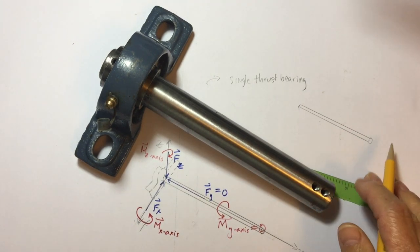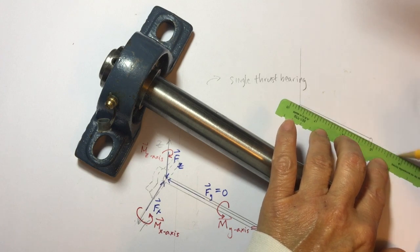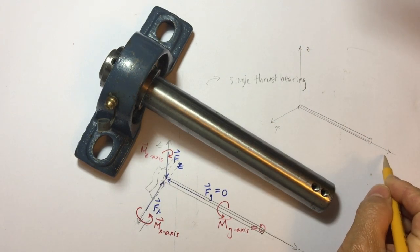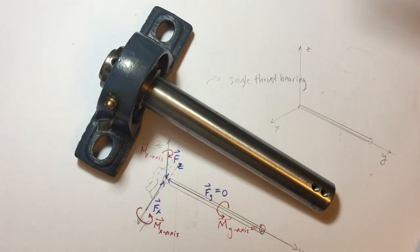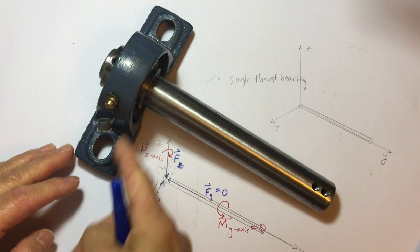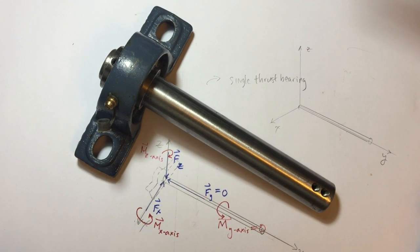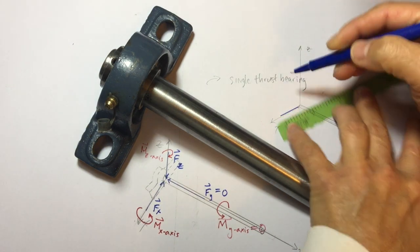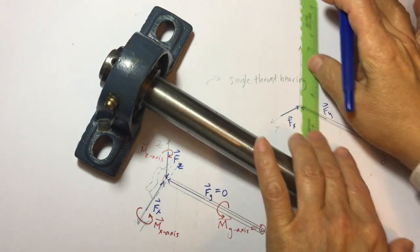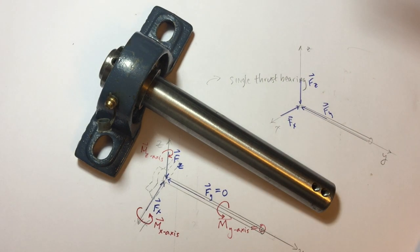Here's our shaft and we will indicate the axes, where this is our x and this is our y. Just like before, the journal bearing prevents the shaft from translating in the x and the z, and now it prevents the shaft from translating axially in the y direction as well. So we will have reaction forces in the x, the y, and z.